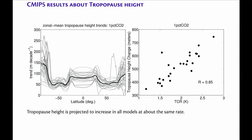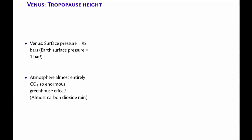The planet with the biggest greenhouse effect in the solar system, depending on how you define an atmosphere, is Venus. Which is kind of similar to Earth in some ways, but different in others. Radiatively, the surface pressure is 92 bars — 100 times that of Earth. It's all carbon dioxide.